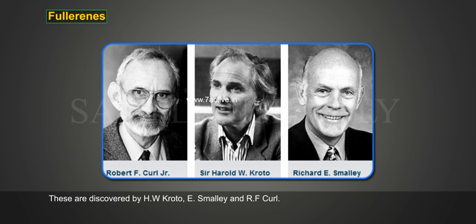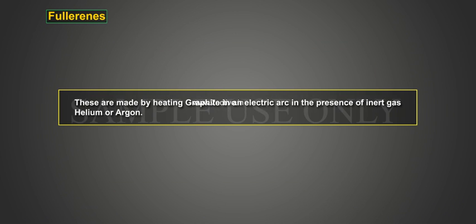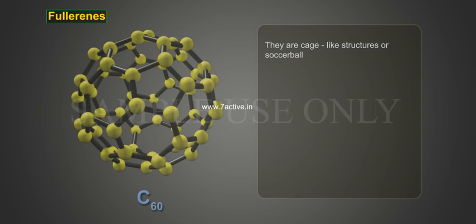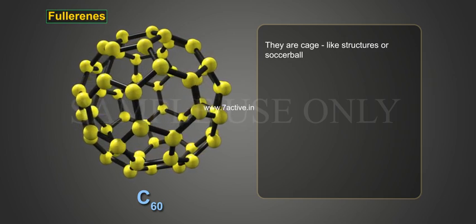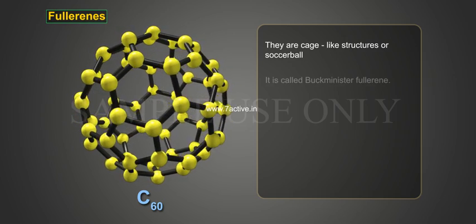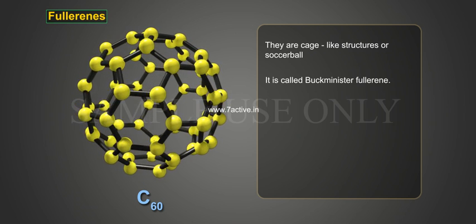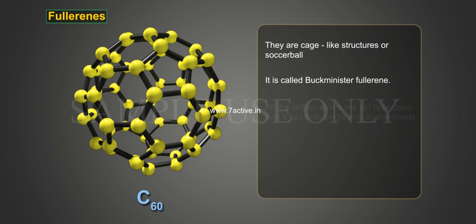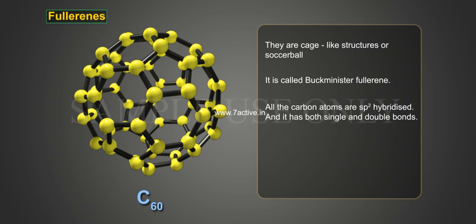Fullerenes were discovered by H. W. Kroto, E. Smalley, and R. F. Curl. They are made by heating graphite in an electric arc in the presence of an inert gas such as helium or argon. They are cage-like structures resembling a soccer ball, and are called buckminsterfullerenes. All the carbon atoms are sp2 hybridized and the structure has both single and double bonds.